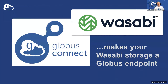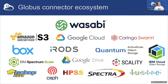Globus works around the system of endpoints. An endpoint is a storage system that has the Globus Connect server software installed along with the Globus for Wasabi connector. We have a connector for Wasabi as well as many other systems, so it allows you to move data from this diverse set of storage systems into your Wasabi buckets — to do so reliably and fast, because fast is in our DNA.